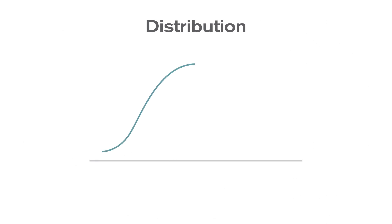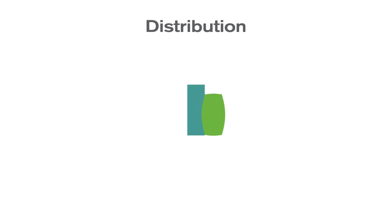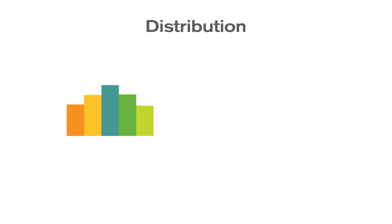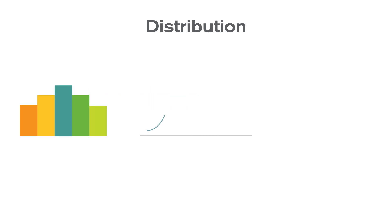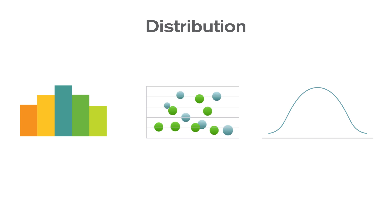Distribution charts are used to show how quantitative values are distributed along an axis from lowest to highest. Distribution charts allow users to identify characteristics like the range of values, central tendency, shape, and outliers.